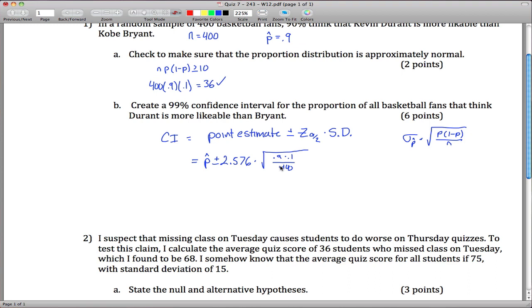Plug that into my calculator real quick and end up with 0.015. So what we get is p-hat which is 0.9 plus or minus 2.576 times 0.015, our standard deviation.